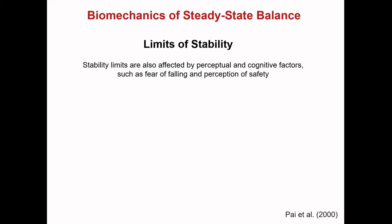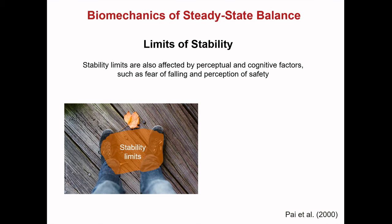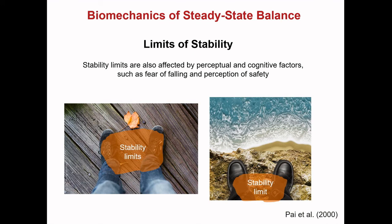The concept of limits of stability is well suited to the systems theory because it is a functional concept that can incorporate various aspects of the context of constraints. For example, stability limits can be affected by perceptual and cognitive factors such as fear of falling and perception of safety. Here we see stability limits for standing on level ground — they cover much of the base of support but don't extend right to the edge, as it's not practically possible to support the entire body weight on the tips of the toes. For a person standing on the edge of a cliff, the base of support is unchanged but the limits of stability are reduced by cognitive factors like fear of falling.